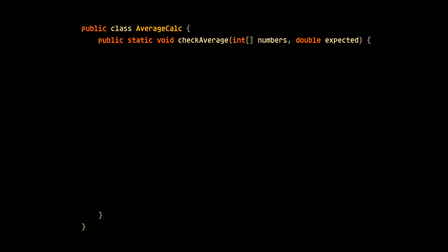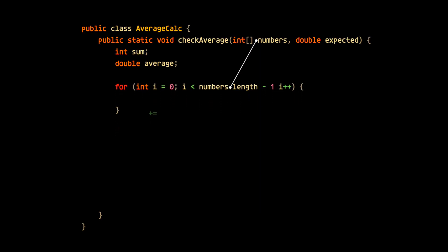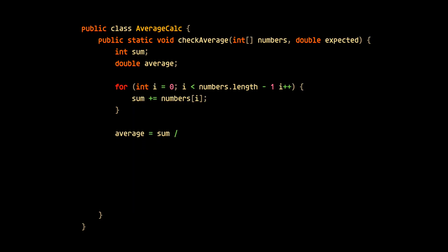Within this method, we declare the variables sum and average, and then we iterate through the numbers array and add each value to the sum. Finally, we calculate the average by dividing the sum by the number of elements in the numbers array.